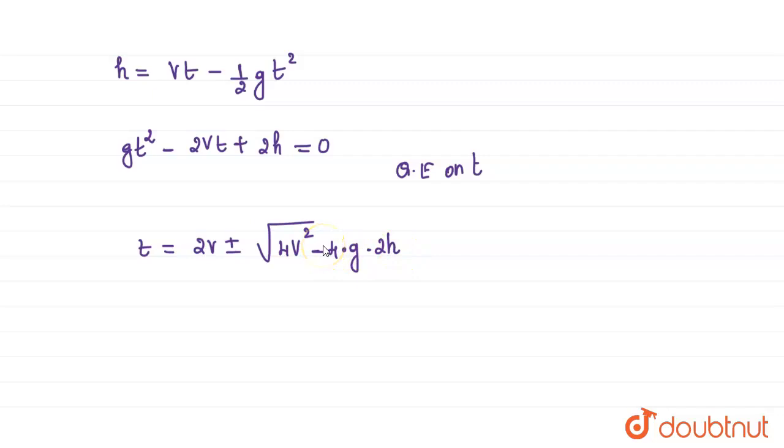Here there is a minus sign, that is minus 2h. The whole is divided by 2a, that is divided by 2. What is a? It is g.